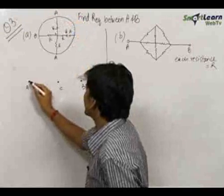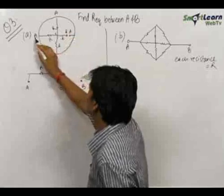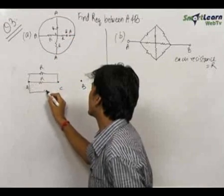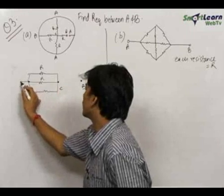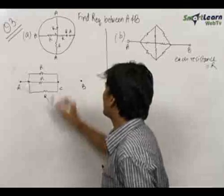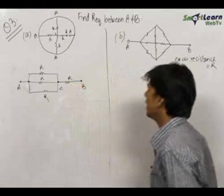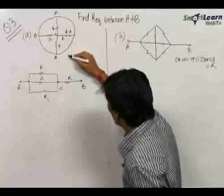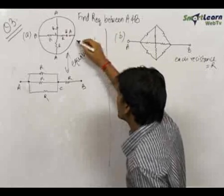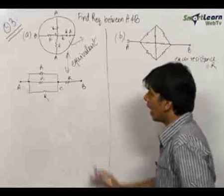We have one resistance between A and C, so we draw one resistance R between A and C. We have another resistance between A and C and another resistance between A and C, so we draw two more resistances between A and C. We have one resistance between C and B, therefore we draw one resistance between C and B. Both these diagrams are totally equivalent, but the original appears confusing; from the redrawn diagram you can clearly find out the equivalent resistance.